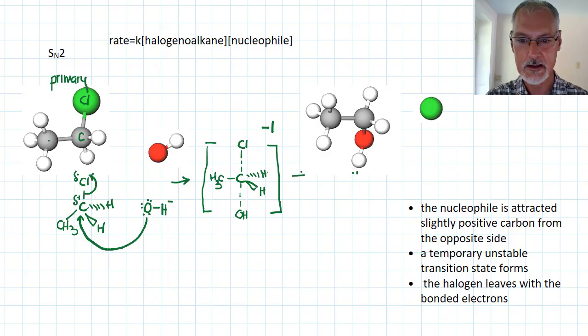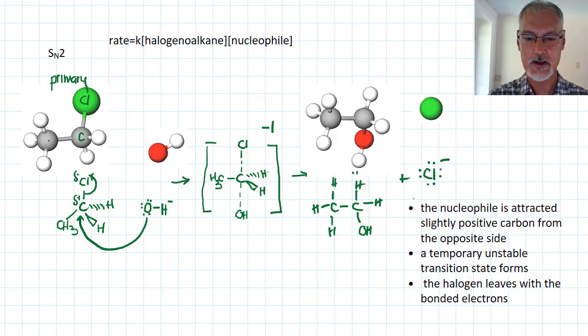When those electrons leave and this bond forms, we then result in this final state over here with a primary alcohol. So we have carbon connected to our hydroxide and our two hydrogens and the methyl group.